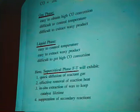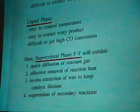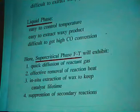On the other hand, in the case of liquid phase, it is easy to control the reaction temperature because of the large heat capacity of the reaction medium. Also, it is easy to extract the waxy product with the aid of mineral oil. But because of the slow mass transfer rate, it's really difficult to get high CO conversion. Here, we expect supercritical phase Fischer-Tropsch reaction to execute the following merits: quick diffusion of the reaction gas, effective removal of reaction heat, residual extraction of wax to keep the catalyst active, and suppression of secondary reactions.